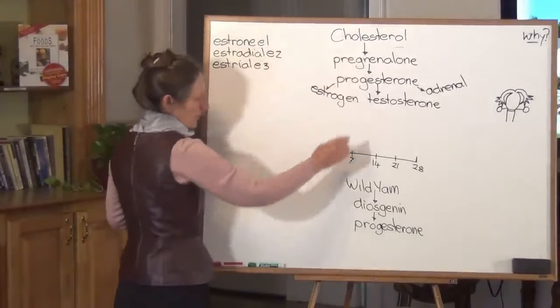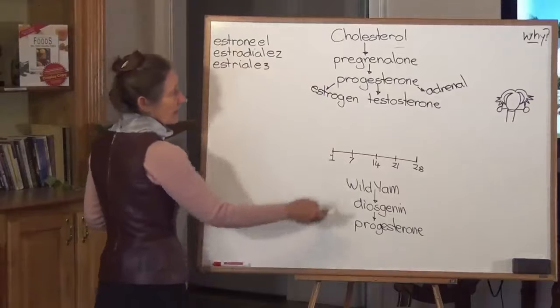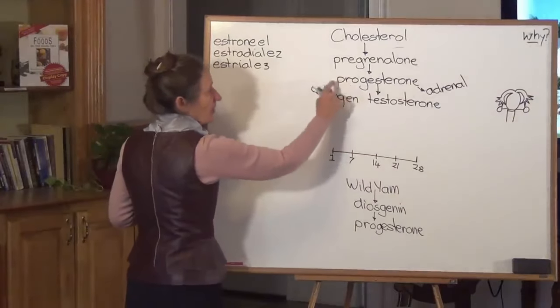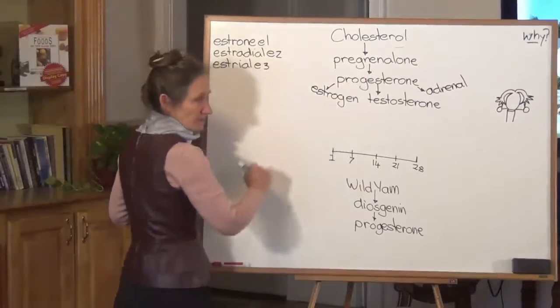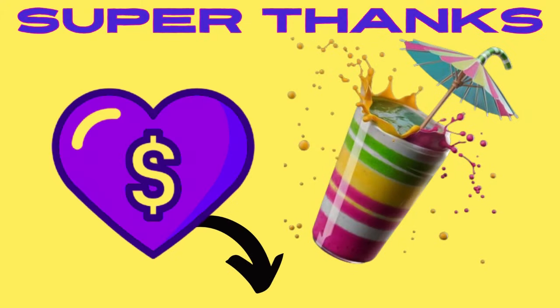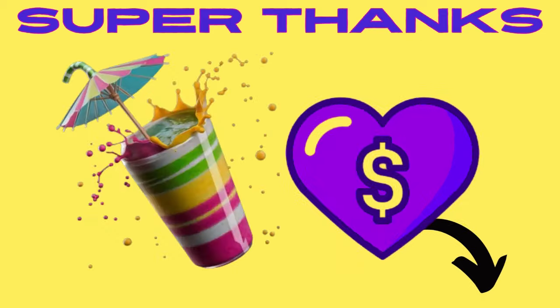From cholesterol your body makes pregnenolone. And from pregnenolone your body makes progesterone. Progesterone is a key hormone because from progesterone estrogen is made. From progesterone testosterone is made. And from progesterone the adrenal hormones are made.